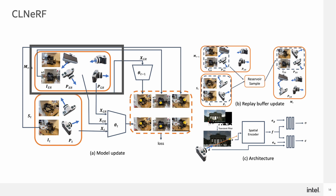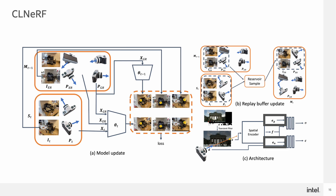In practical scenarios where more storage is available, experience replay is optionally used, where a small set of historical images are stored in the replay buffer MT-1 and used together during model updates. To allow a single model to handle scene appearance and geometry changes, we assign for each scan one trainable appearance embedding and one trainable geometry embedding, and use segmentation masks to filter out dynamic objects within each scan.